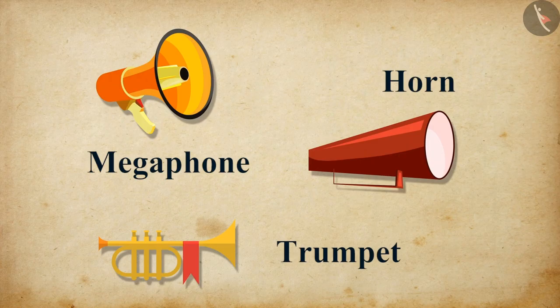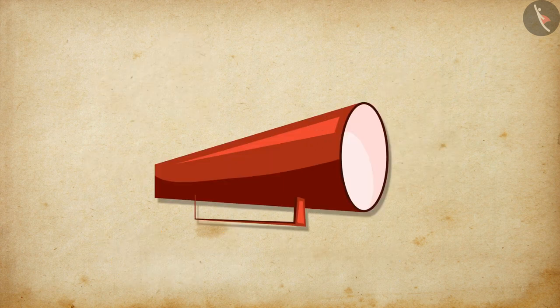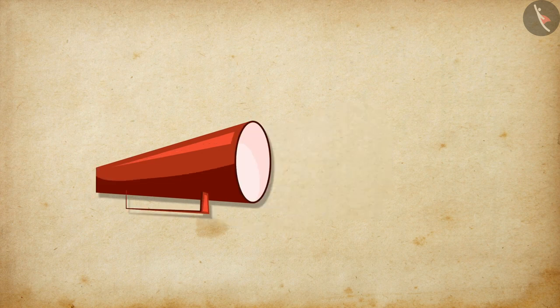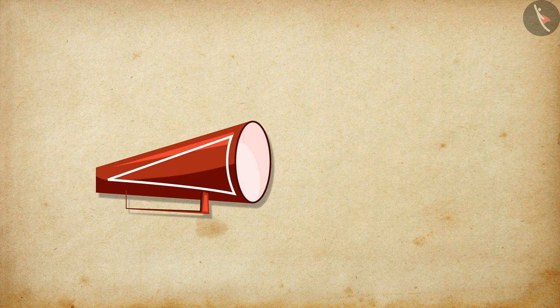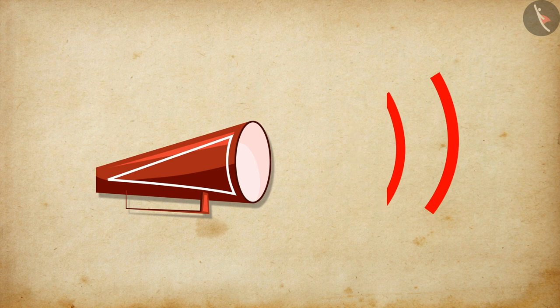We learned about multiple reflections. Now, let us see the ways in which they are helpful. Megaphones, horns and musical instruments such as trumpets use multiple reflections. They are designed to send sound in a particular direction without spreading it in all directions. These instruments have a tube followed by a conical opening, which reflects sound successively, guiding the sound waves from the source in the forward direction towards the audience.